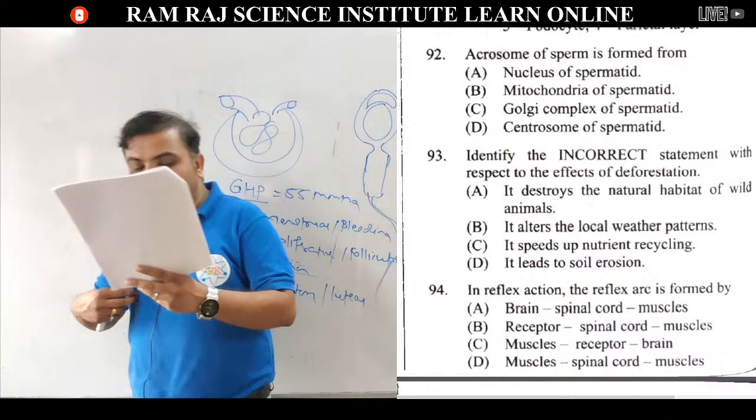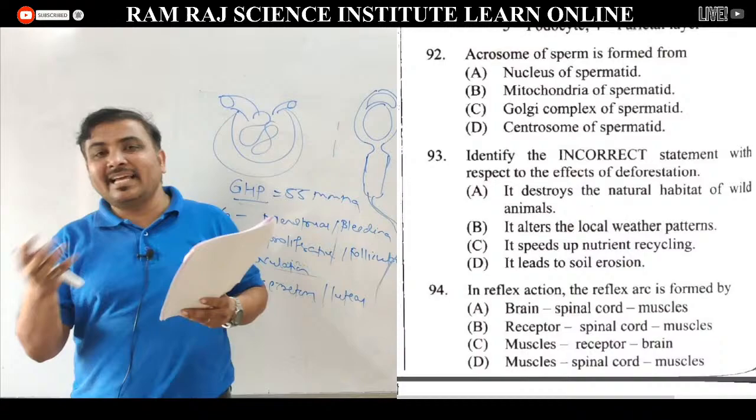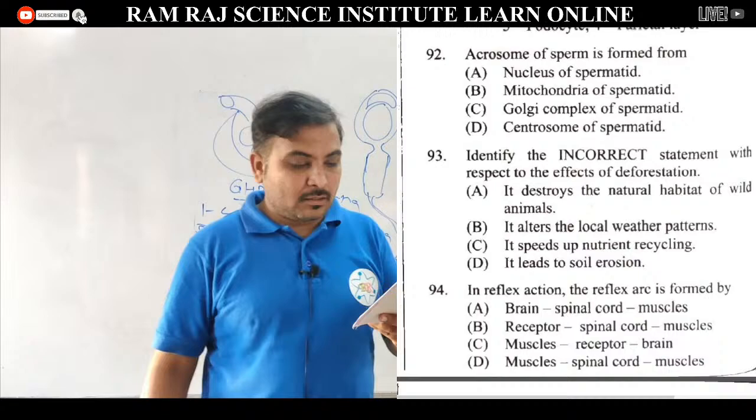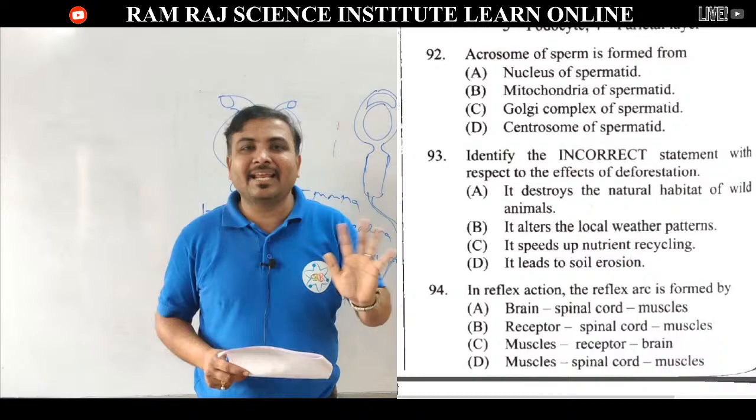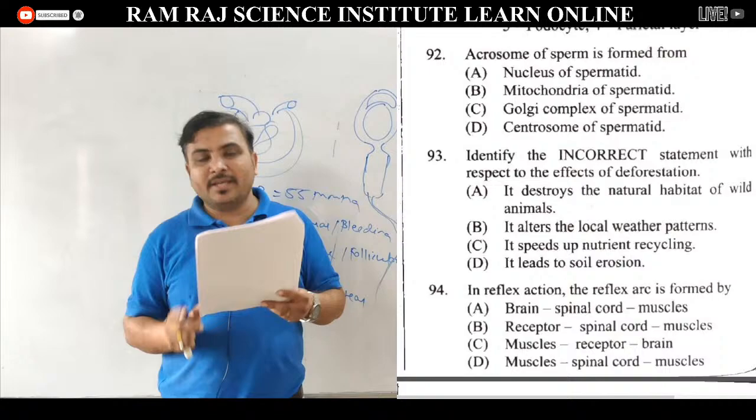Question 93: identify incorrect statement with respect to effects of deforestation. It destroys natural habitat of wild animals — correct. It alters local weather patterns — correct. It speeds up nutrient cycling — ये गलत है, deforestation से nutrient cycling disturb हो जाता है, speed up नहीं होता. तो statement C is incorrect.